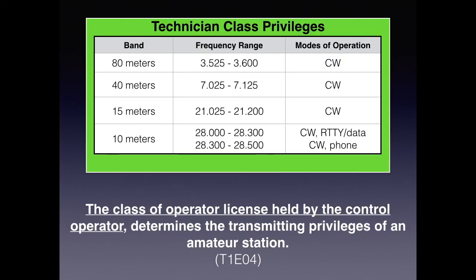It's easy to remember that you have full privileges from 30 megahertz and up. However, you need to know your restrictions for your technician class in the HF bands. On 80 meters, 40 meters, and 15 meters, you have a restricted area where you can perform CW or Morse code. On 10 meters, there's a narrow portion of the band where you're allowed to do CW or data as well as phone privileges. The class of operator license held by the control operator determines the transmitting privileges of the amateur station.